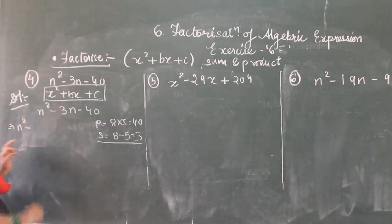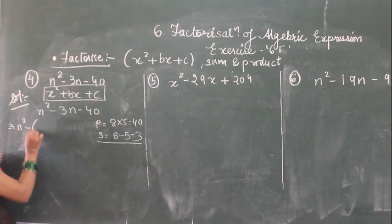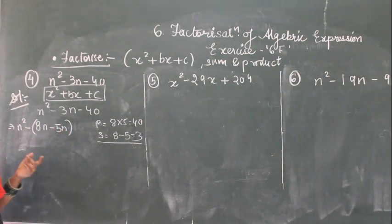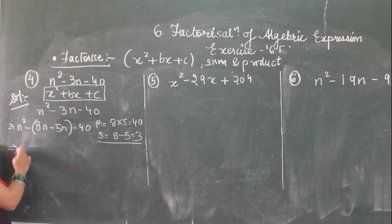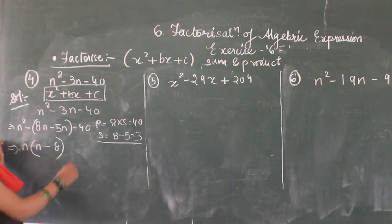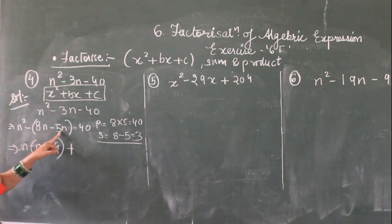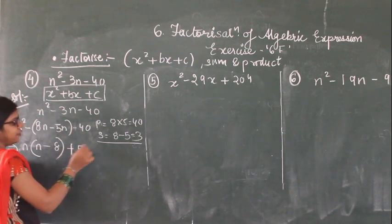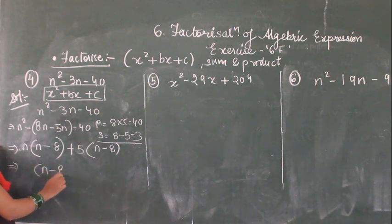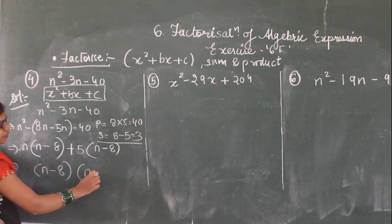So n square minus 8n plus 5n minus 40. Now take the common — from n square minus 8n take n common, what is left is n minus 8. Then minus minus is plus, so from 5n minus 40 take 5 common and you get n minus 8 remaining. So n minus 8 is common. We write n minus 8 times n plus 5. These are the factors and this is the answer.